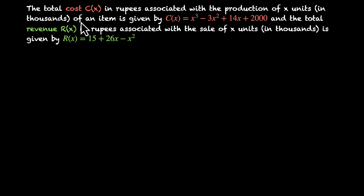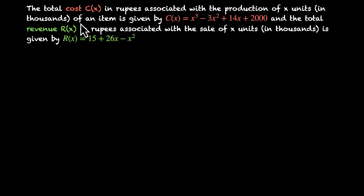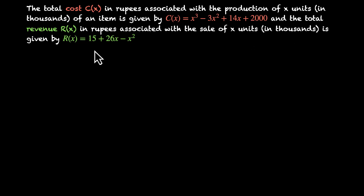Here's the problem. The total cost C(x) in rupees associated with the production of x units — in thousands — of an item is given by C(x) = x³ - 3x² + 14x + 2000. The total revenue R(x) in rupees associated with the sale of x units in thousands is given by R(x) = 15 + 26x - x².